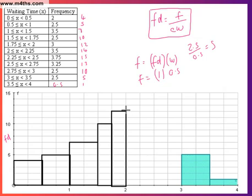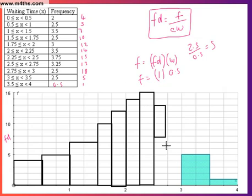2 to 2.25 is going to be 14, so that's 14. And again, the width is just going to be 1 of the blocks. 2.25 to 2.5 is going to give us 15, which is going to look something like that. 2.5 to 2.75 is going to be 13, which is going to be there. And then 2.75 to 3 is going to give us 10. And then we're back on course with what they've done for us.